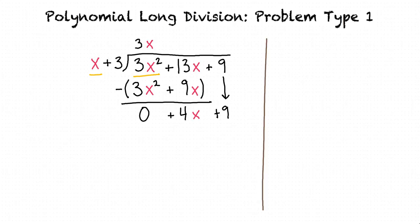To continue the problem, we'll repeat the first step, but this time we'll divide 4x by x. Okay, 4x divided by x is 4. Awesome. So let's write +4 above the long division symbol.